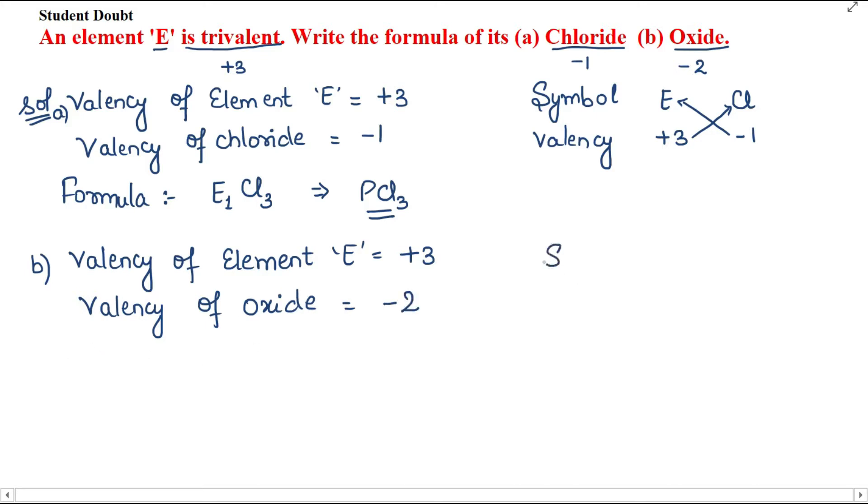Now we mention the symbols. The cation is E and the anion is O. The valency of oxide is minus 2 and E is plus 3. We cross multiply. The formula is E2O3.